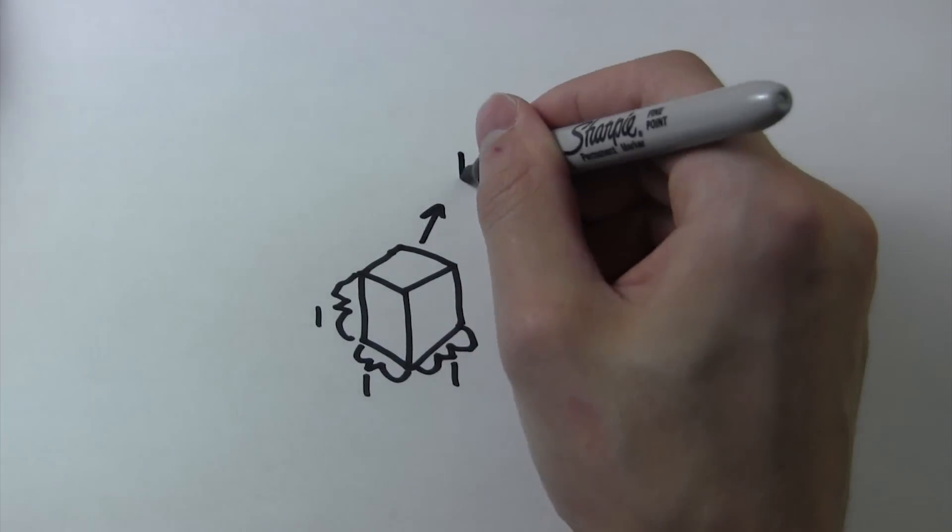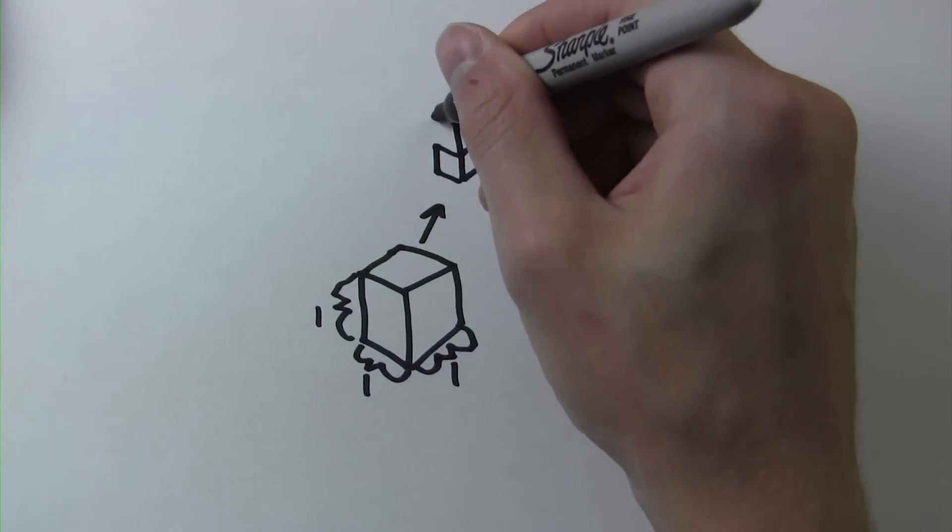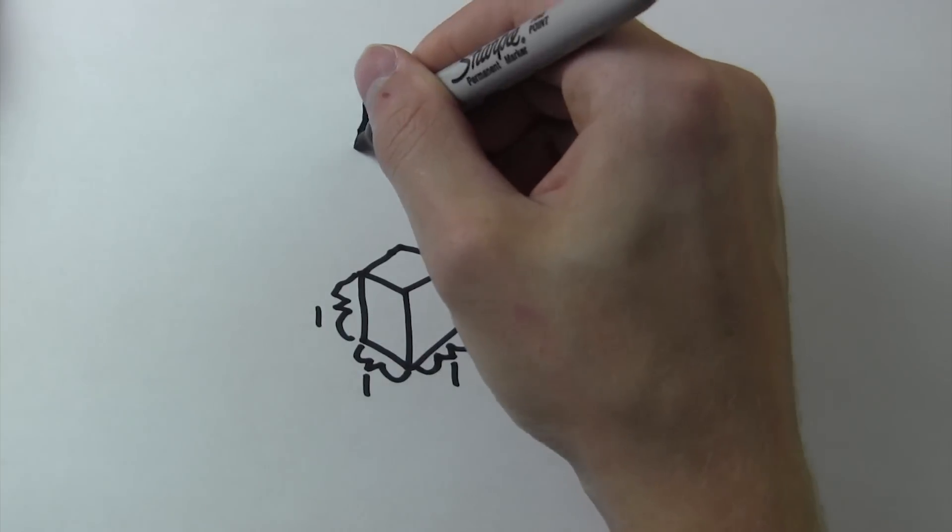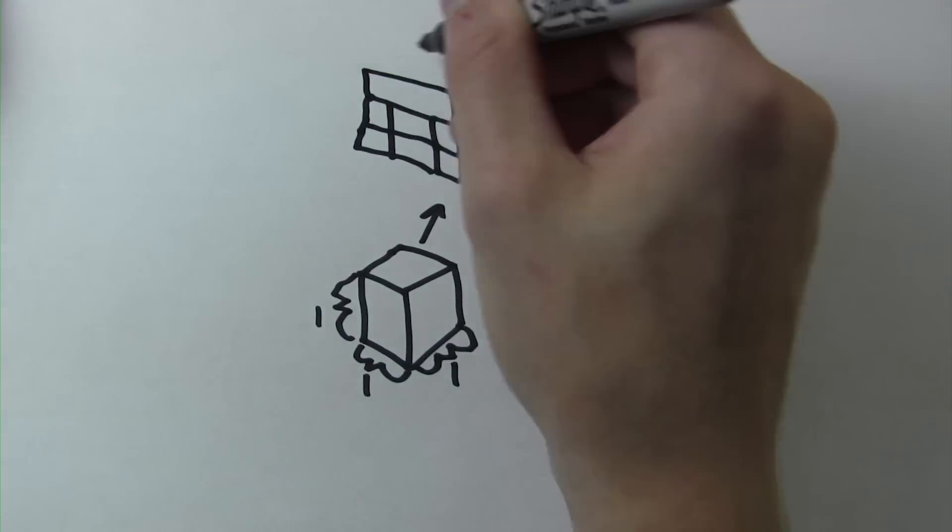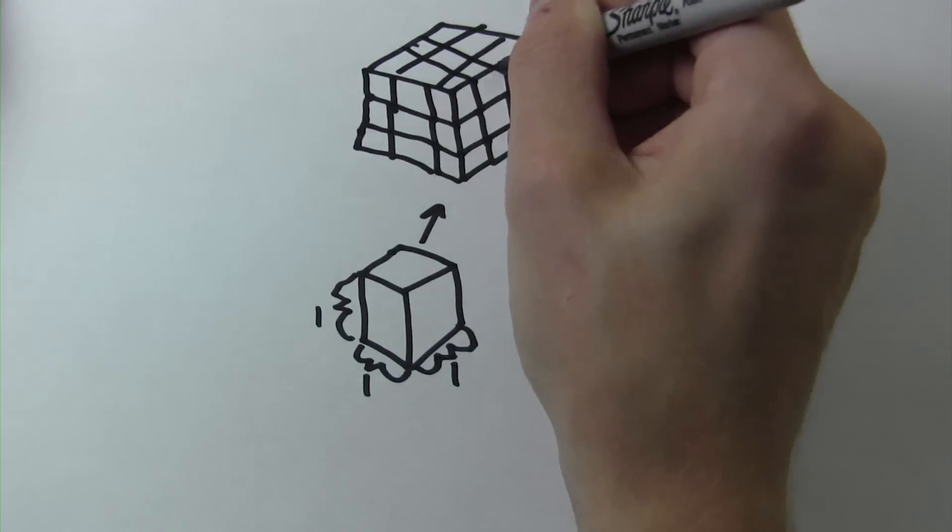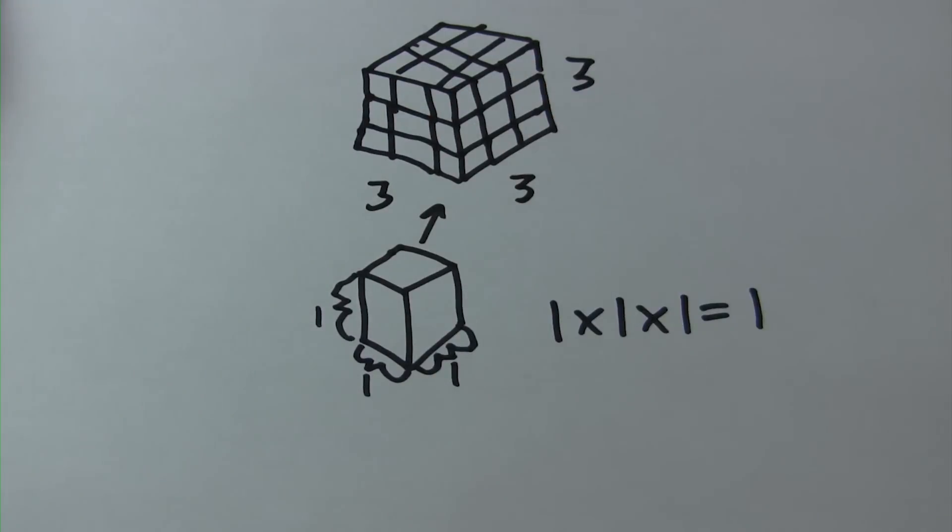Now let's say we took a bunch of these cubes and made them into a much larger cube that was three inch by three inch by three inch. In this case, we would have three times three times three, which equals 27 cubes.